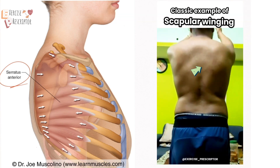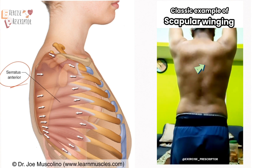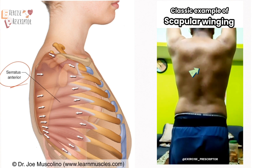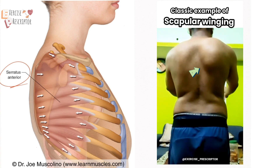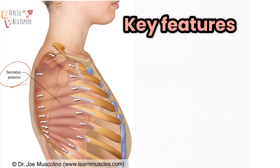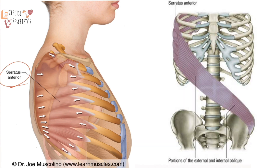The more important stabilization action of the serratus anterior is to prevent lateral tilt winging of the scapula and to stabilize the scapula in the medial position.